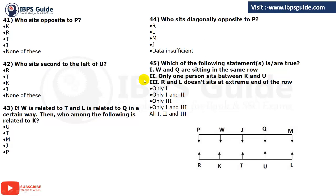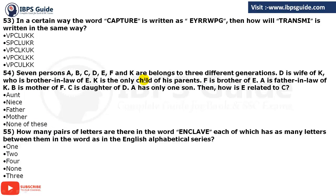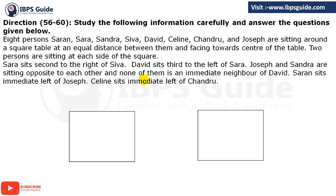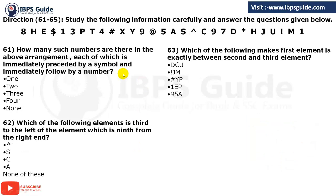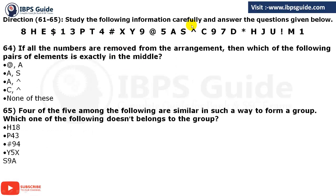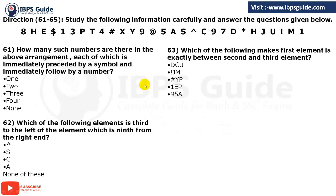Yesterday we covered the first 20 questions, from question 1 to 60. Now we are starting from question 61 to 80. The first set of questions is 61 to 65 — three questions on one arrangement and two on another. Let's start from question number 61.